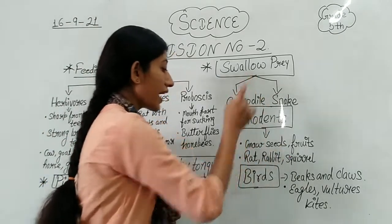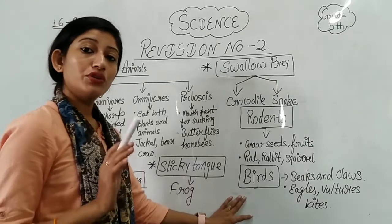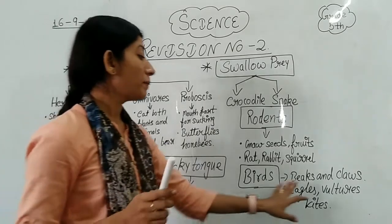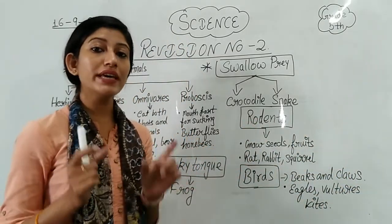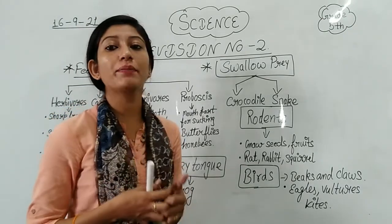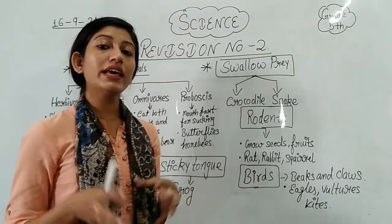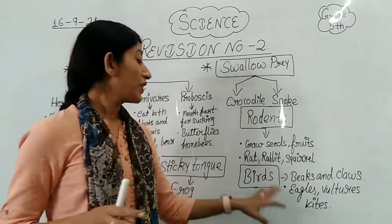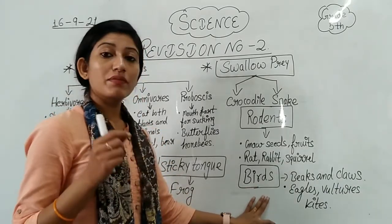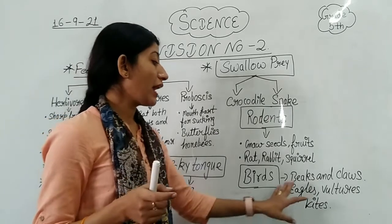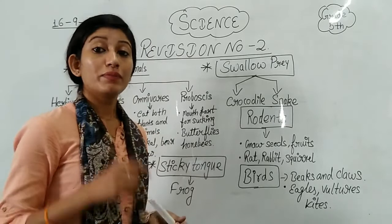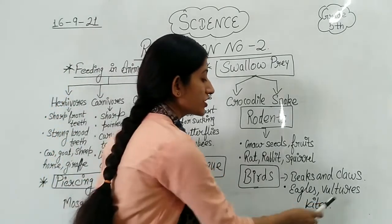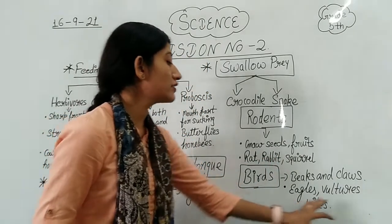Then we have birds. Do you know what the feeding habits of birds are? Birds have beaks and claws, and both of these help them in taking food. With the help of claws they catch their prey, and with the help of a beak they eat. Birds that have very sharp claws and beaks include eagles, vultures, and bats.